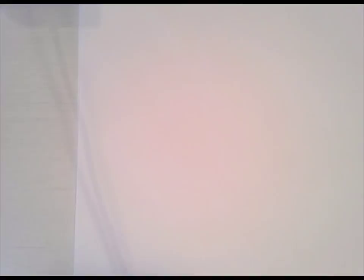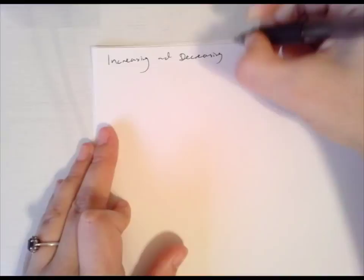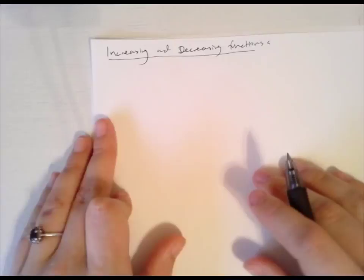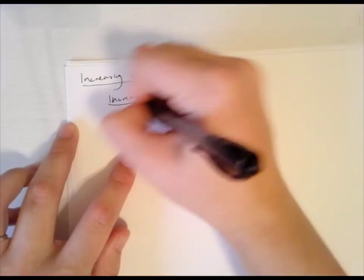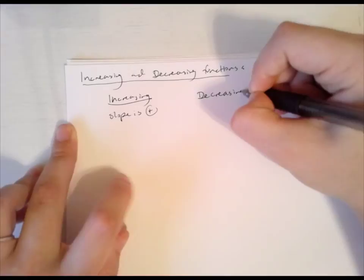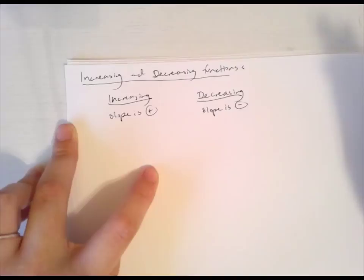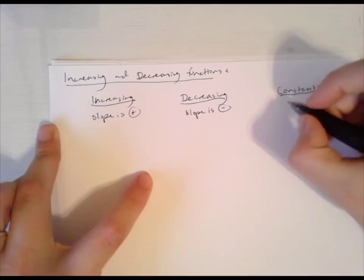Now let's talk about increasing and decreasing functions. Increasing on a graph means that your slope is positive. Decreasing means your slope is negative. And when you have a constant section, that means your slope is zero.